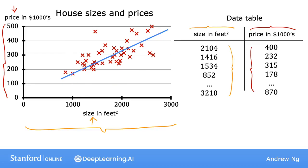Each cross corresponding to one row of the table. For example, the first row of the table is a house with size 2,104 square feet, so that's around here. And this house sold for $400,000, which is around here. So this first row of the table is plotted as this data point over here.